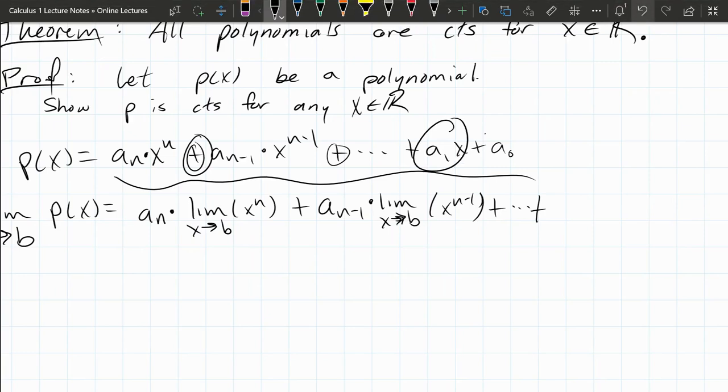We're now on this term: a_1 times the limit as x approaches b of x to the first power, plus, last up, just a_0 by itself—there's no x's there.